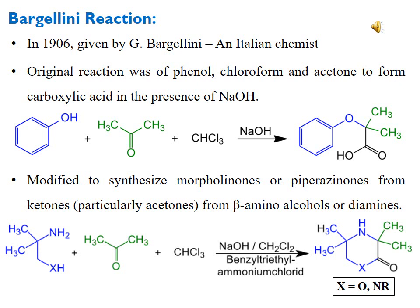If X is oxygen, the six-membered ring having nitrogen and oxygen at positions 1 and 4 is called morpholine. Oxygen is given position 1 and nitrogen is given position 4. Due to the presence of ketonic functionality, it is known as morpholinone.